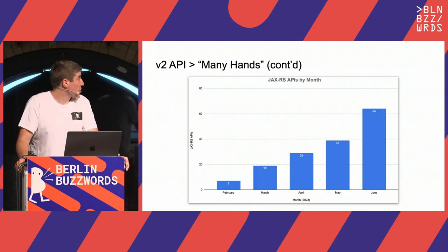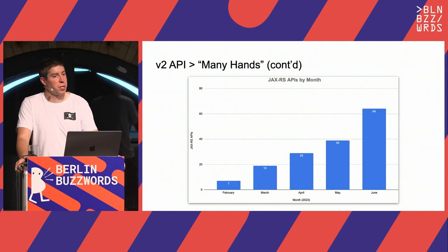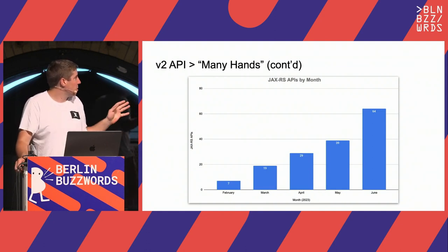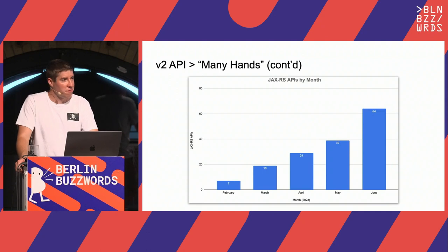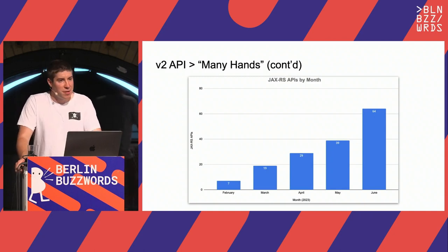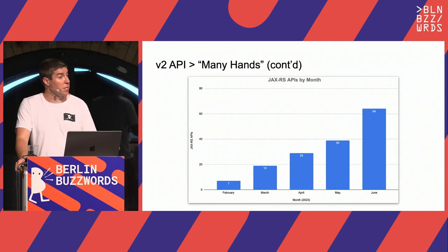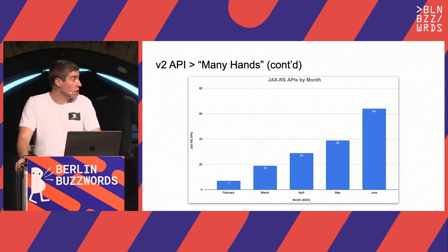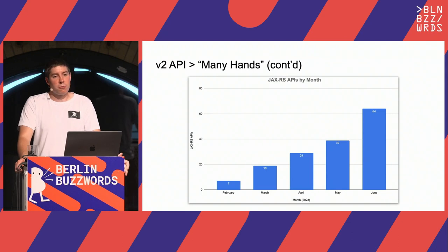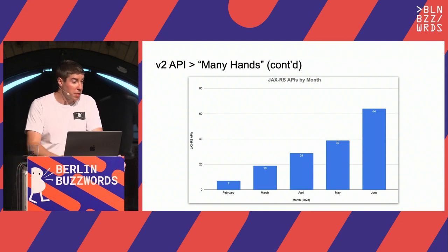To hit this point harder — I have a graph of conversions to our JAX-RS framework. For the first several months I was tracking this, there was a relatively consistent uptick, converting five or ten APIs a month. Then between May and June, there's a big uptick. It's tempting to think that's conference-driven development, but really what happened is that some first-time contributors who had been around the project for several months had really gotten their feet under them and started to be much more productive. This graph really shows the enablement work paying off.